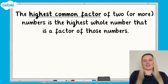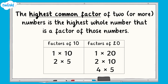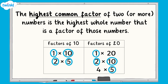The highest common factor of two or more numbers is the highest number that is a factor of those numbers. For example, the factors of 10 are 1, 2, 5 and 10, and the factors of 20 are 1, 2, 4, 5, 10 and 20. The common factors of 10 and 20 are therefore 1, 2, 5 and 10, and the highest common factor is 10.